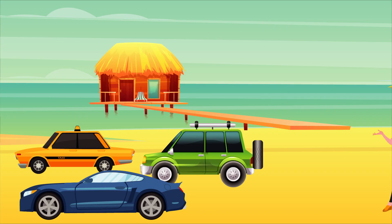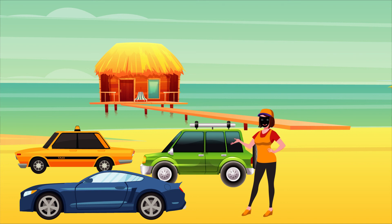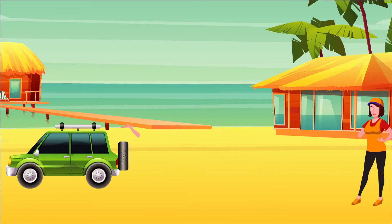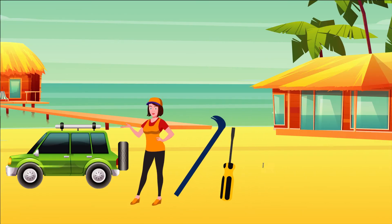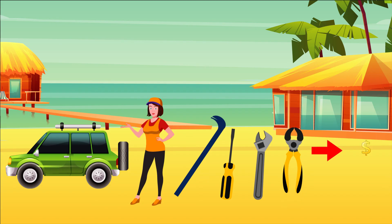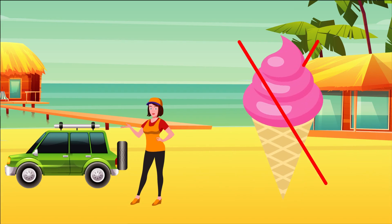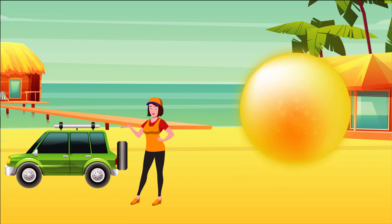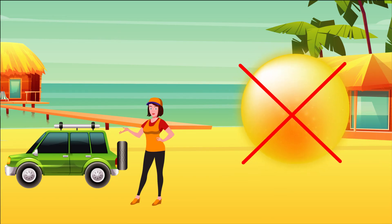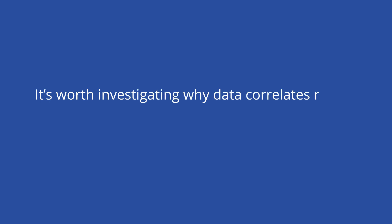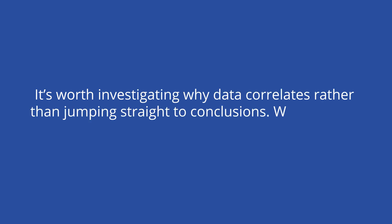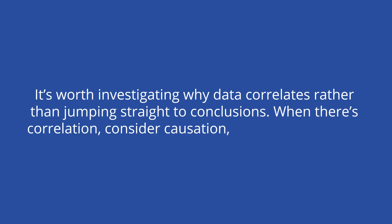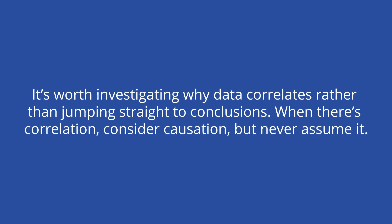The third and final step is to eliminate alternative explanations and third variables. If you want to prove that Sally is the car burglar, you have to verify that her income increases after cars are broken into, that her ice cream sales haven't gone up, and that the fact that it's summer has no bearing on the situation. Showing correlation isn't even a full step to proving causation — it's worth investigating why data correlates rather than jumping straight to conclusions. When there's correlation, consider causation, but never assume it.